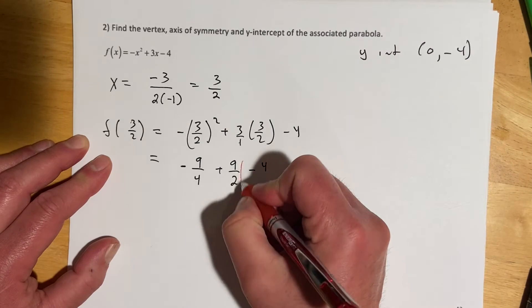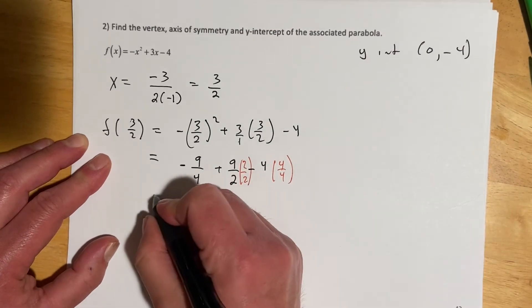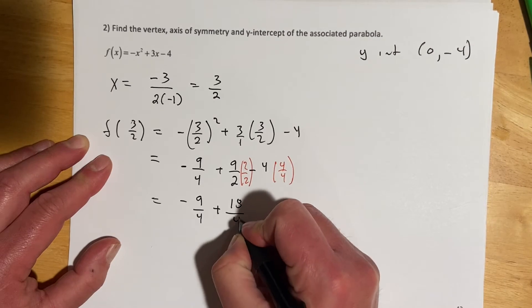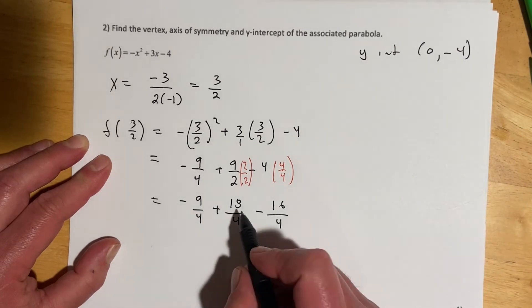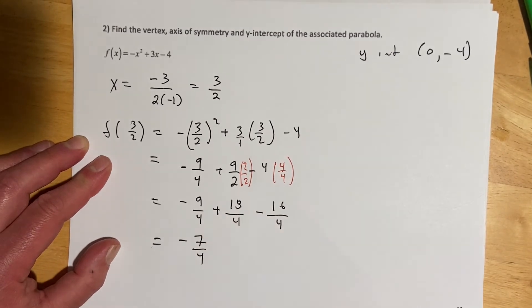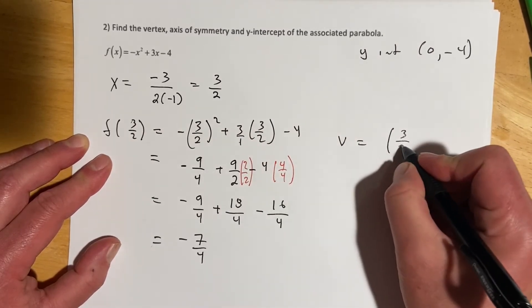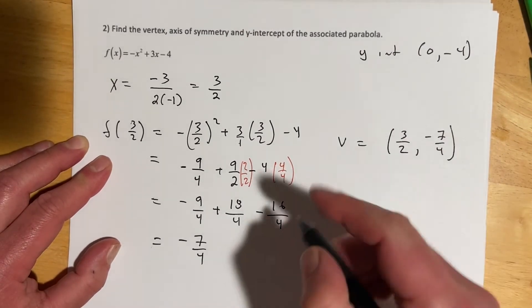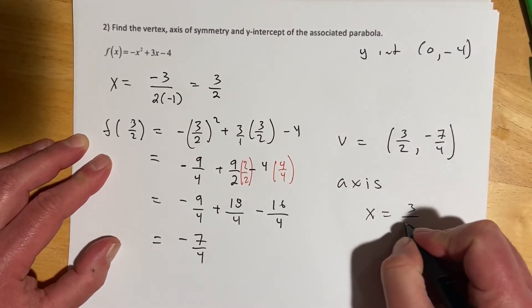And then there, let's get common denominator of 4 going everywhere. So we'll do 4 over 4 right here. So then this is negative 9 fourths plus 18 fourths minus 16 fourths. And that would be, let's see, that would leave 2, and then that down 7, so it equals negative 7 fourths. So a vertex is going to be at 3 halves and negative 7 fourths. And then axis of symmetry, always the x-coordinate of the vertex, so that would be x equals 3 halves.